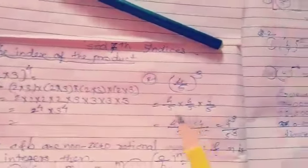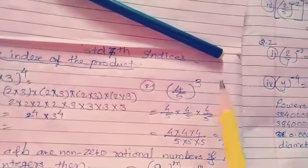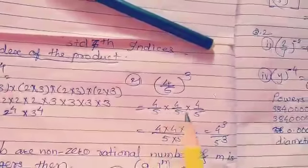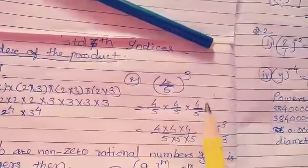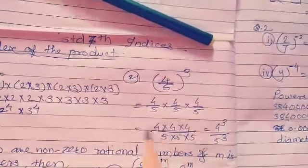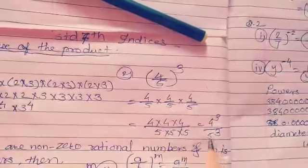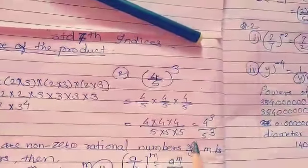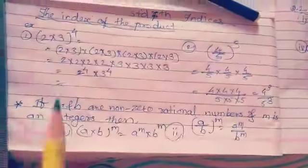Question 2: 4 upon 5, raise to 3. Here, 4 upon 5 is written 3 times. So 4 into 4 into 4 over 5 into 5 into 5 gives us 4 raise to 3 upon 5 raise to 3. That is the right answer.